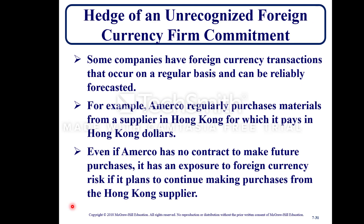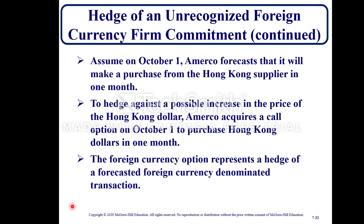Some companies have foreign currency transactions that occur on a regular basis and can be reliably forecasted. For example, AmeriCo regularly purchases materials from a supplier in Hong Kong, paying in Hong Kong dollars. Even without a contract for future purchases, AmeriCo has foreign currency risk exposure if it plans to continue those purchases. Assume on October 1st, AmeriCo forecasts a purchase from the Hong Kong supplier in one month. To hedge against a possible increase in the price of the Hong Kong dollar, AmeriCo acquires a call option to purchase Hong Kong dollars in one month — representing a hedge of a forecasted foreign currency denominated transaction. These hedging strategies are used to limit foreign currency exposure risk. Please read chapter 7.